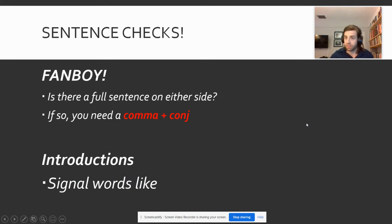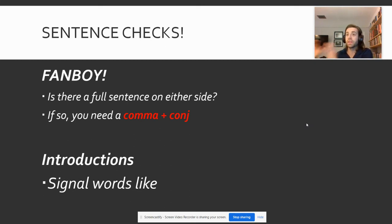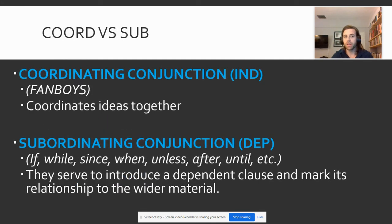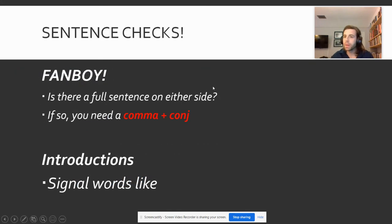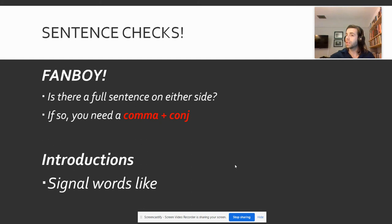So again, our checks for these first two comma rules: number one, if you see a FANBOY — like 'and,' 'or,' or 'so' — you need to check: is this a full sentence in front of it, and is this a full sentence after it? If so, you need a comma and a conjunction. And then if you see a signal word like 'if,' 'while,' 'since,' 'when,' 'unless,' 'after,' 'because' — one of those subordinating conjunctions — you need to make a decision. Is this dependent clause coming at the beginning of a sentence and acting as an introduction? If so, you're going to need a comma. If the dependent clause is coming after the independent clause, it's still a complex sentence, but no commas needed.